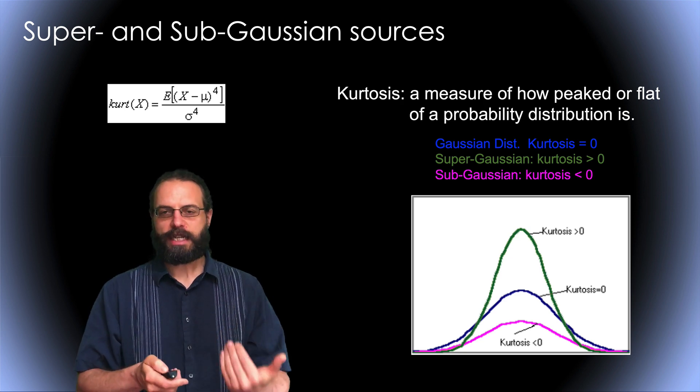When you apply ICA, this is important. On the left here is what I showed in a previous video for a type of sub-gaussian source. For EEG data, EEG data is super-gaussian, so it would look more like what's on the right of this slide.